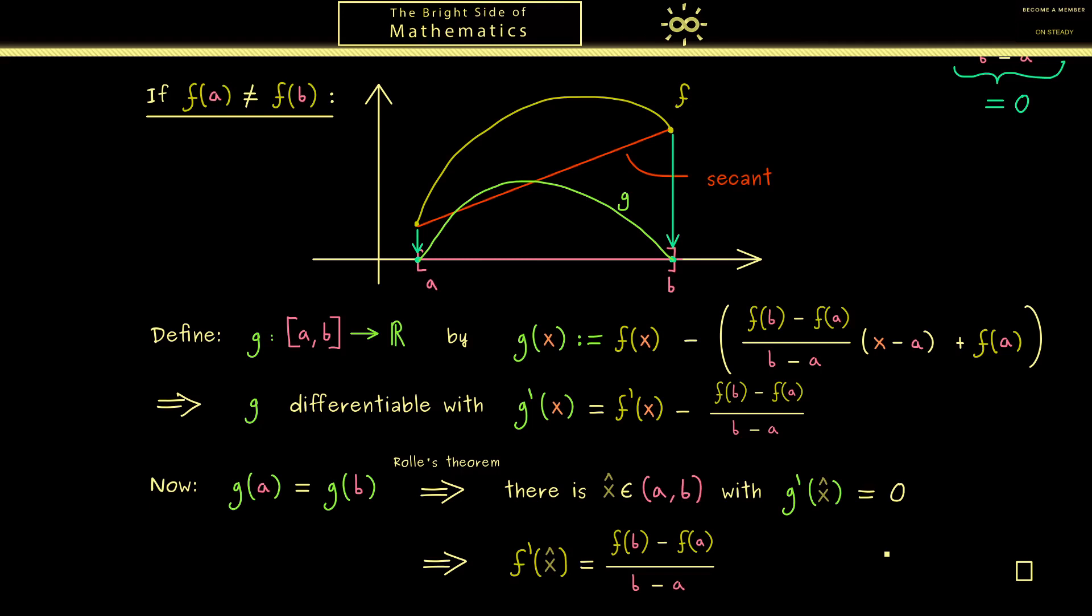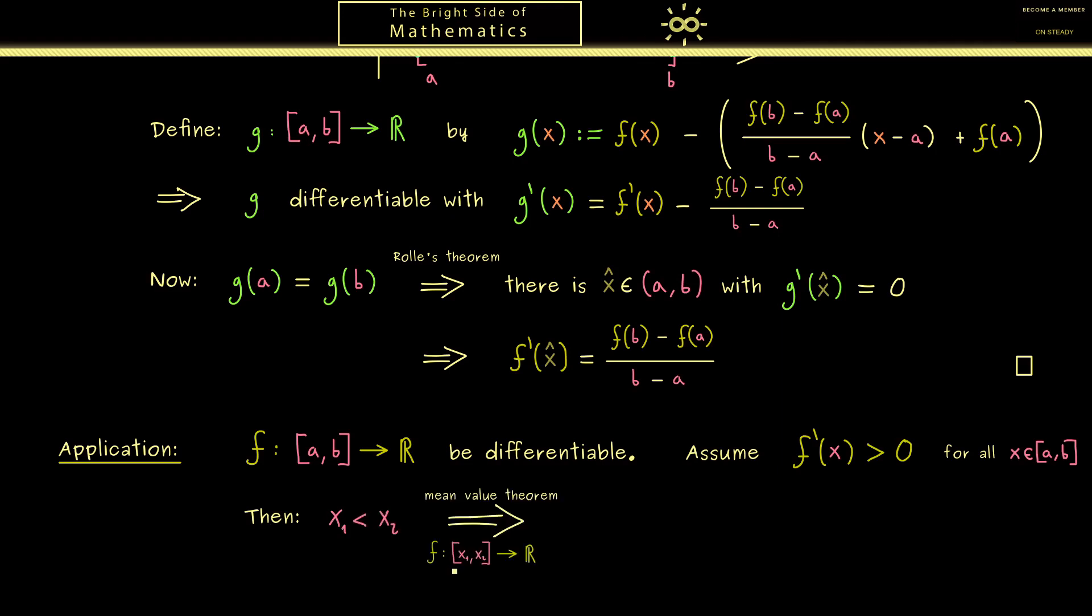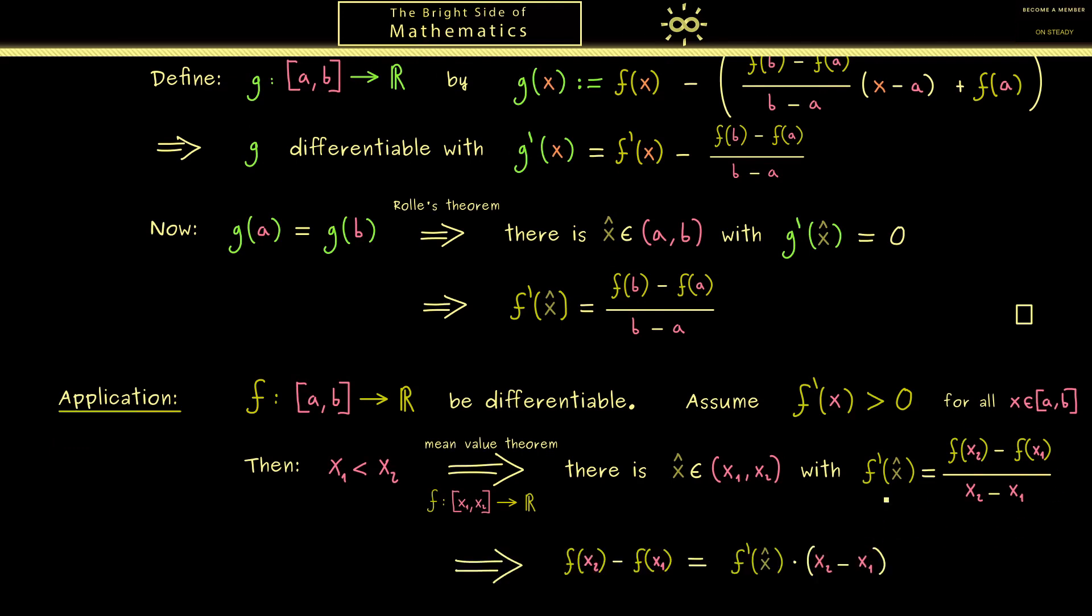Then for the end of the video let's look at an application of this nice theorem. Again let's take a function f defined on a compact interval and differentiable. Now assume that we know that the derivative is positive no matter which point x we put in. Then we can look at two arbitrarily chosen points x1 and x2 where x2 is greater than x1. Then we can apply the mean value theorem where we shrink the domain to the interval [x1, x2]. This means that we find our point x hat in the open interval (x1, x2). And as before at this point we find the mean slope. Then we can just multiply (x2 - x1) on both sides and get this equality.